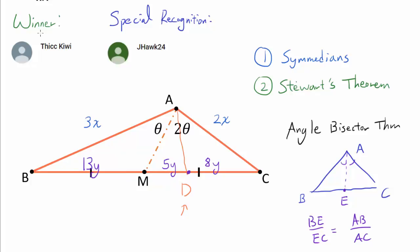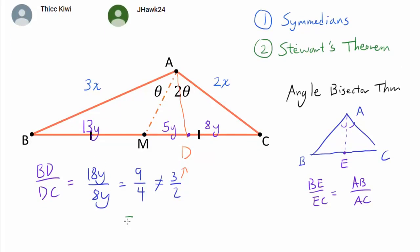Because if this thing over this thing turns out to be 3 over 2, then we know D is the angle bisector, which may help us solve this problem. But that's not really the case because if we look at BD over DC, that's 18Y over 8Y, which is equal to 9 over 4. And this is not equal to 3 over 2. But wait, it is very similar to 3 over 2. In fact, 9 over 4, we can obtain that by squaring 3 over 2. And this is where the C-median comes into play if you are acquainted with it.